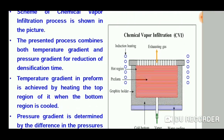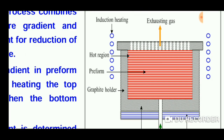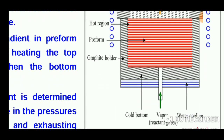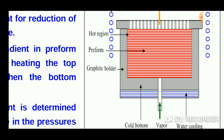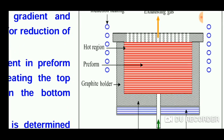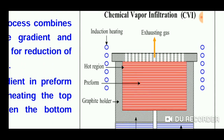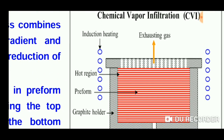In fabrication, the preform is placed in a container which is surrounded by a heater only on the top surface. On the bottom surface, it is supplied with water cooling, so it is called a cold bottom. The vapor gases are passed into the container, where the vapor intrudes into the preform and settles in it when it is in the hot region. The hot region is used for the settling of the vapor gases, while the remaining gases exit from the top region as exhaust gas.